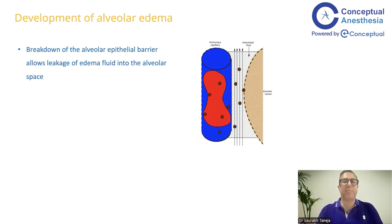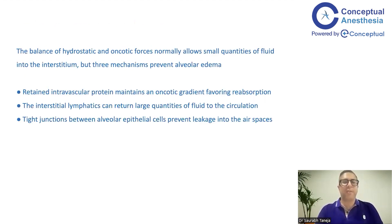Then the alveolar epithelial barrier also breaks down. Firstly, pulmonary capillary fluid and protein leak into the interstitium, and then when alveolar damage occurs simultaneously, fluid goes into the alveolar space. The balance of hydrostatic and oncotic forces normally allows only small quantities of fluid in the interstitium. Intravascular proteins maintain the oncotic gradient, and interstitial lymphatics can return large quantities of fluid to circulation. When both are overwhelmed, we have interstitial edema; when the tight junctions between alveolar epithelial cells break down, we have alveolar edema.